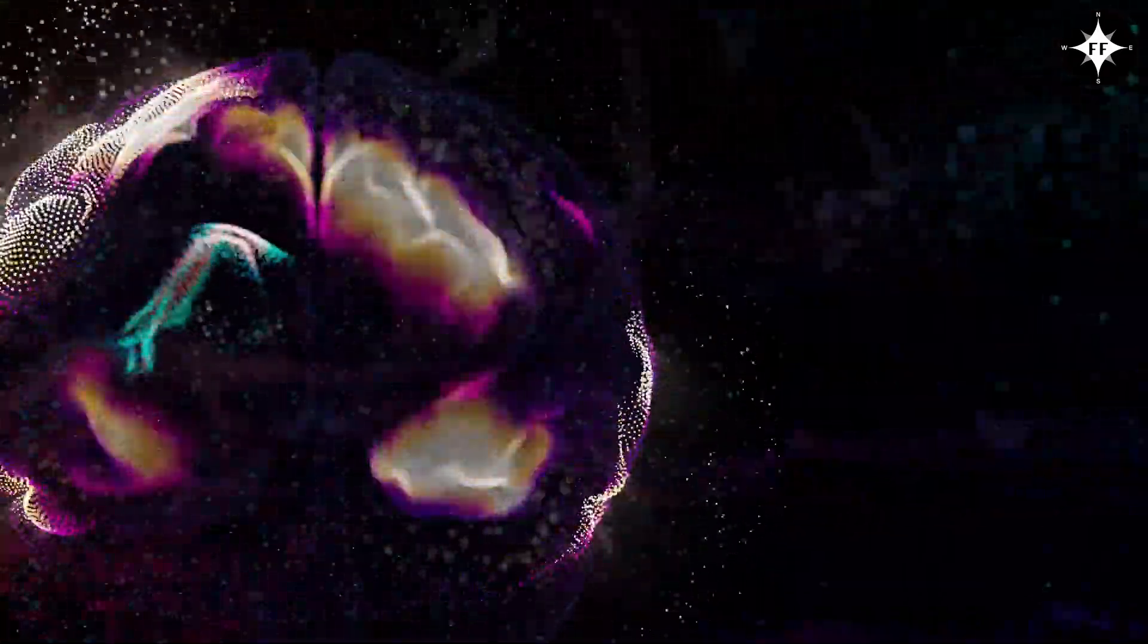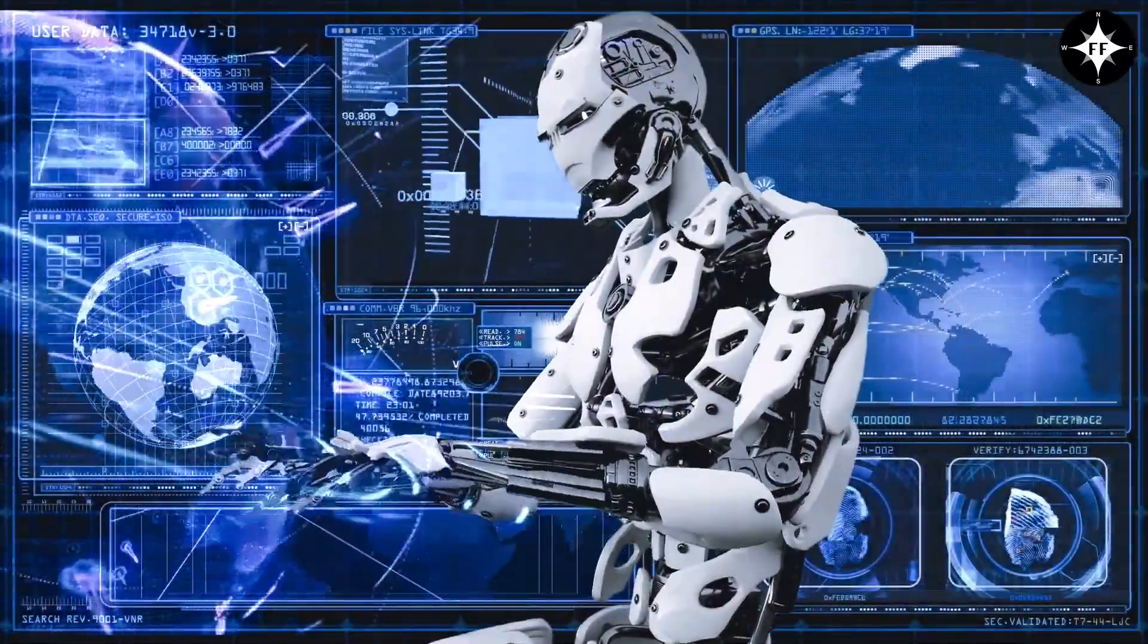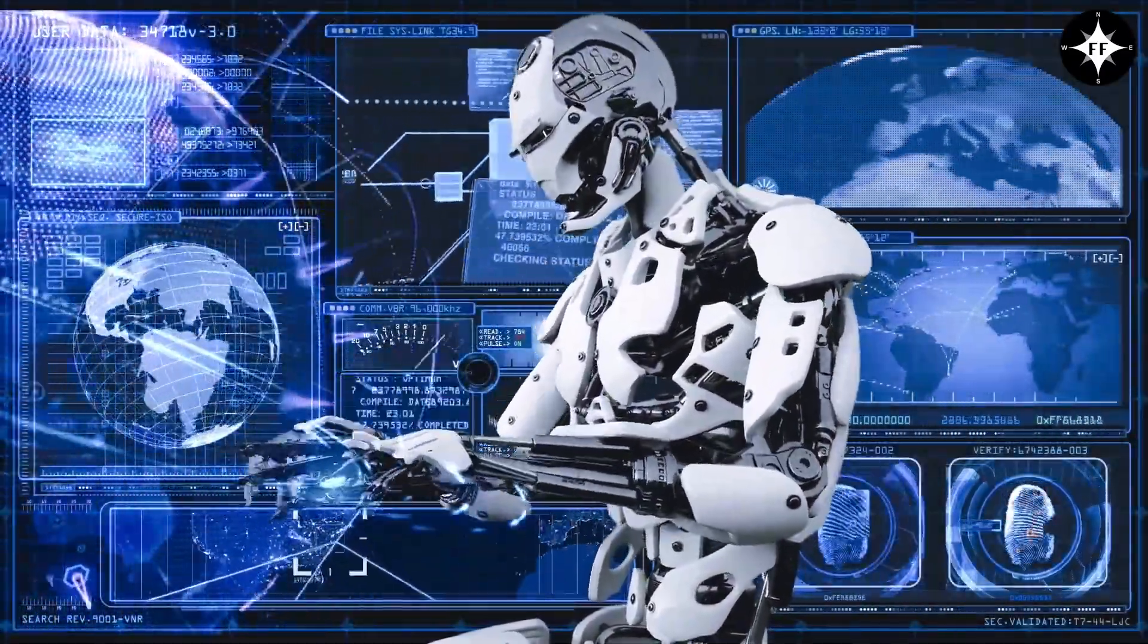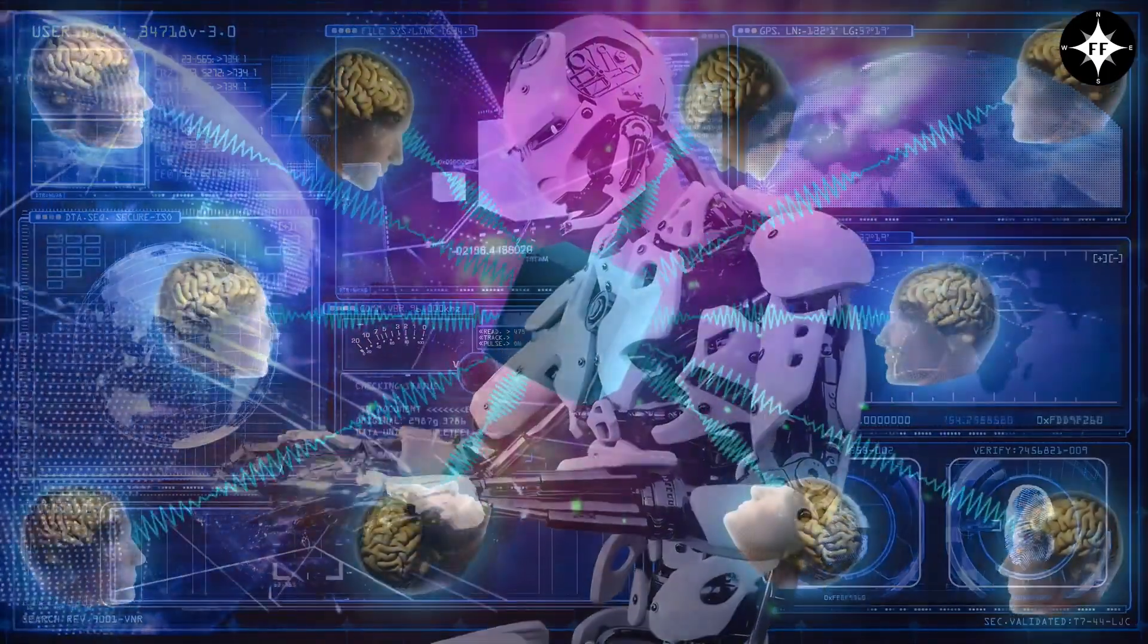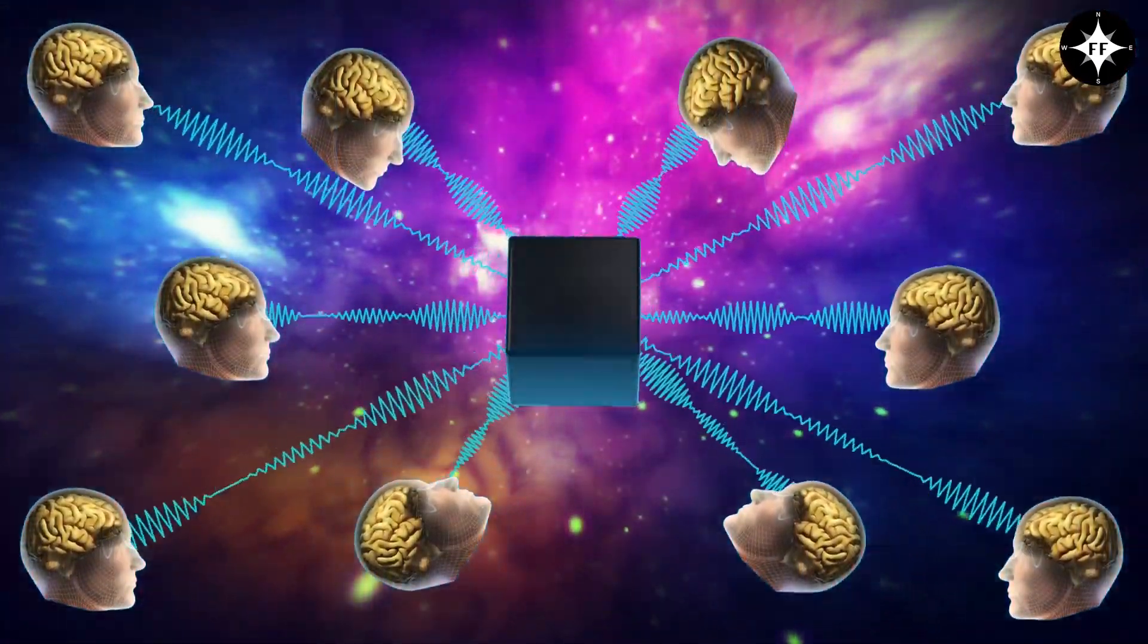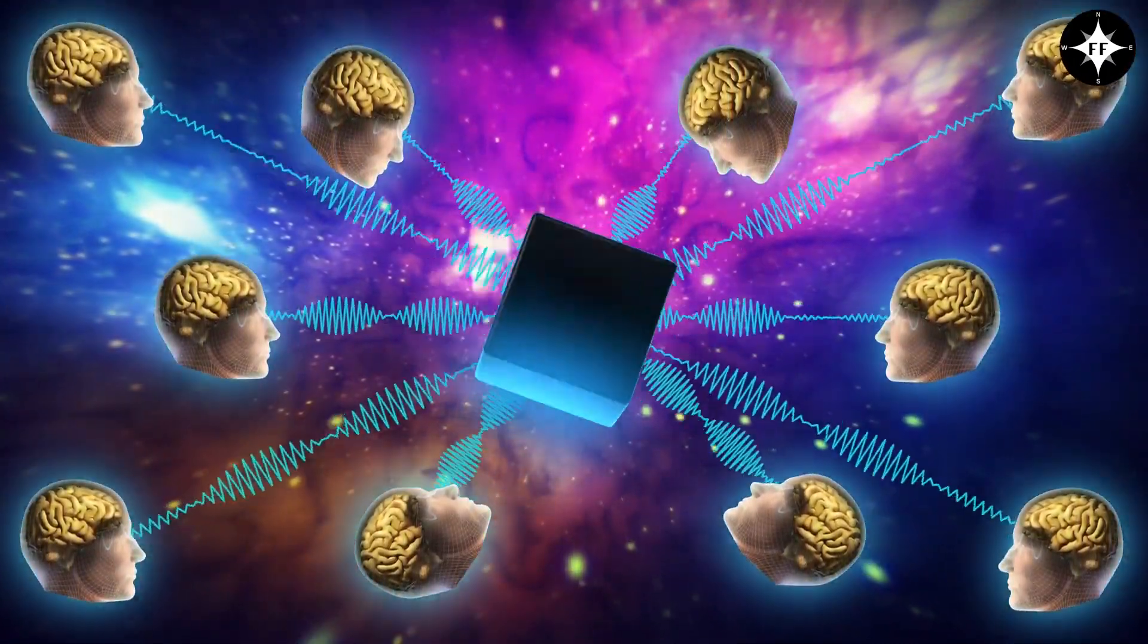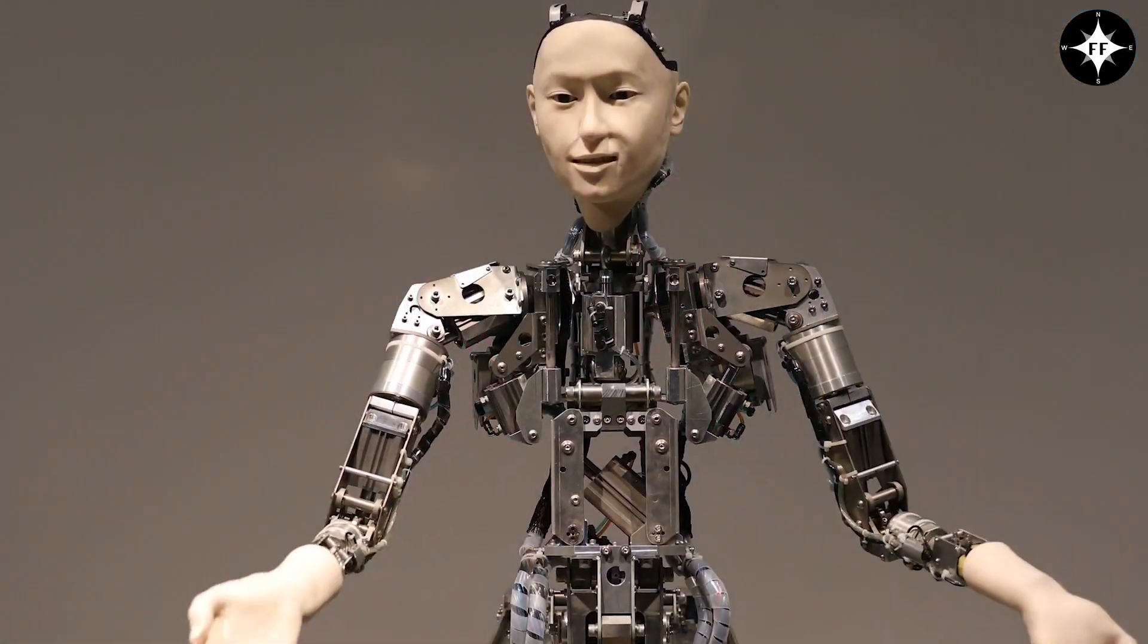What is artificial intelligence? Artificial intelligence, or AI, is the simulation of human intelligence processes by computer systems. AI can perform tasks that typically require human intelligence, such as learning, decision-making, problem-solving, and language processing.